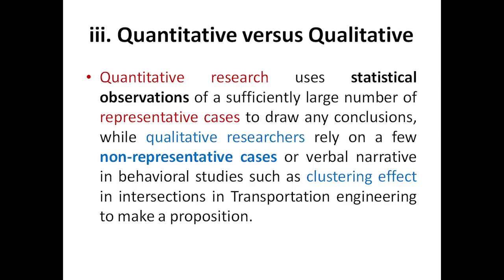Quantitative research uses statistical observation of a sufficiently large number of representative cases to draw conclusions. For example, if a study finds ten thousand spherical nanoparticles and five thousand pentagonal nanoparticles, those statistical observations let us conclude that the majority are spherical. This means we can use spherical calculations rather than pentagonal ones since they are far fewer in number.